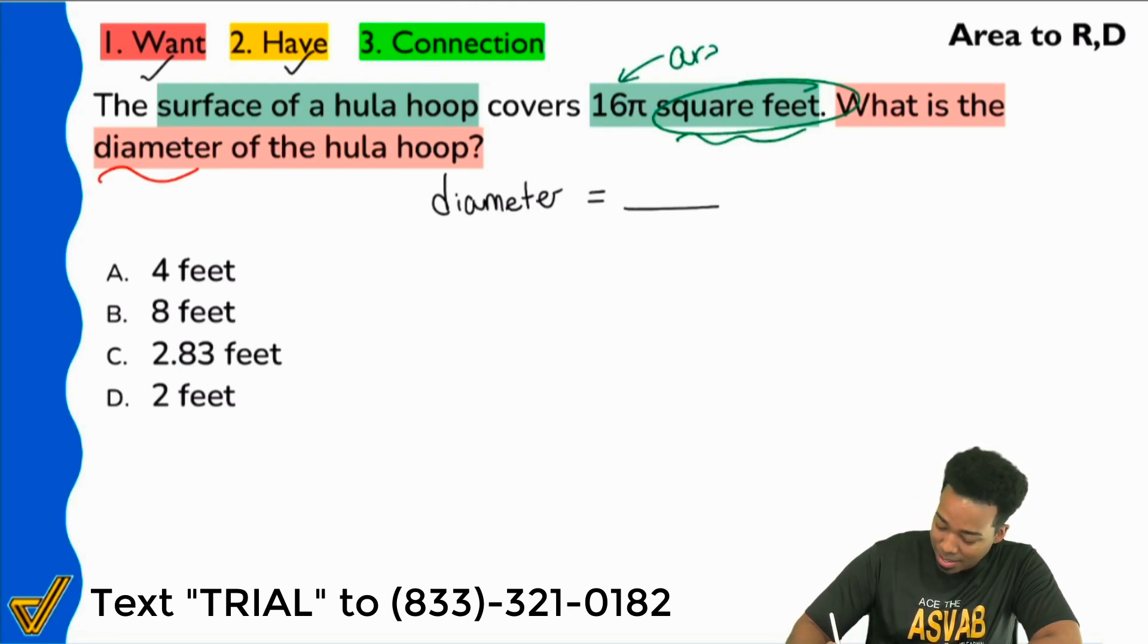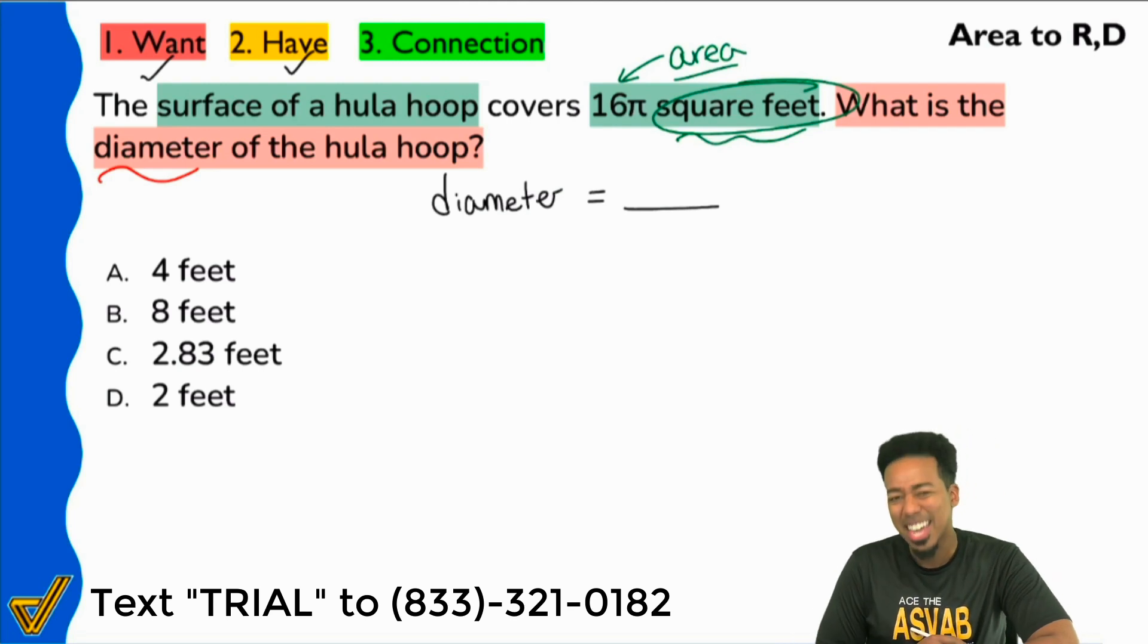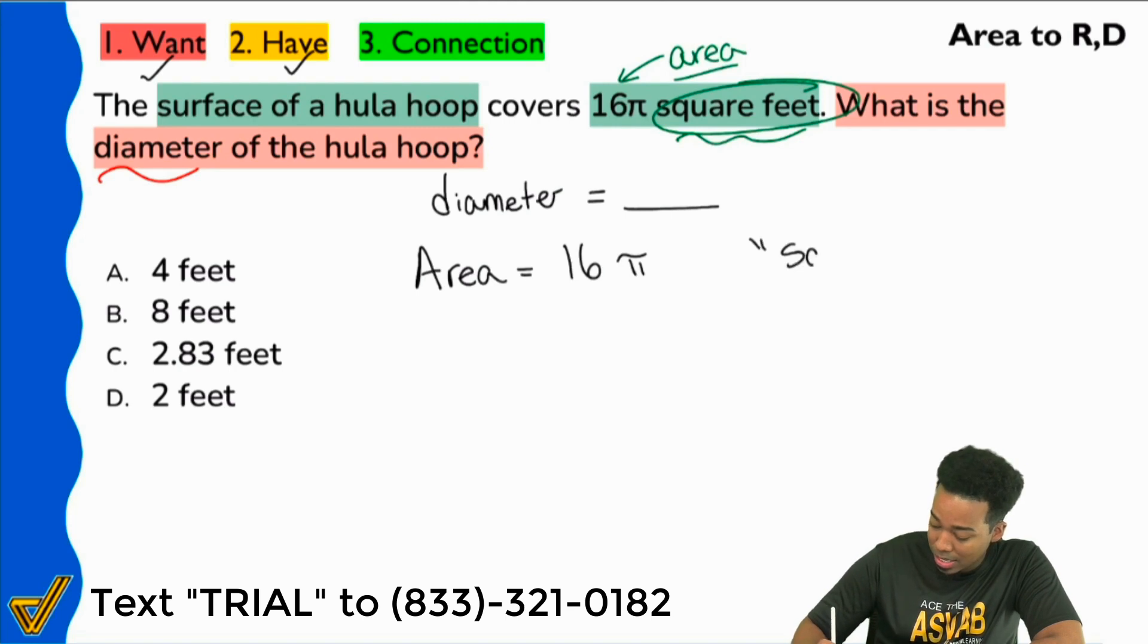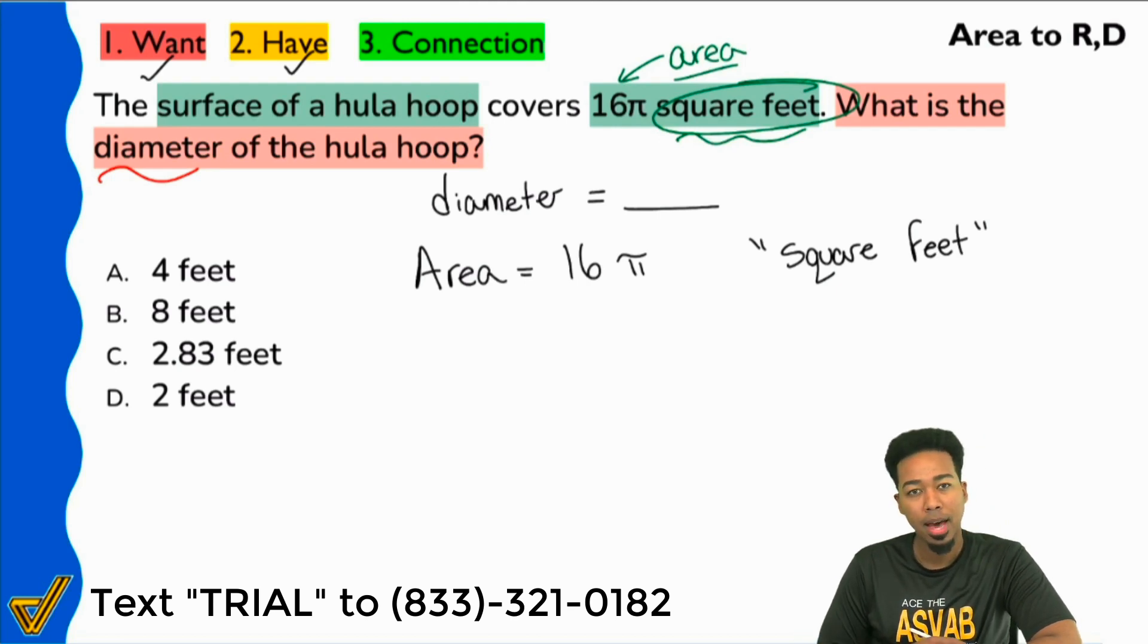So here, this 16π, it really denotes area. Boom. So with that said, we're going to say that we're given the area equals 16π. Again, what denotes it is the square feet. That's really what gives it away. Now, how do we use this information?